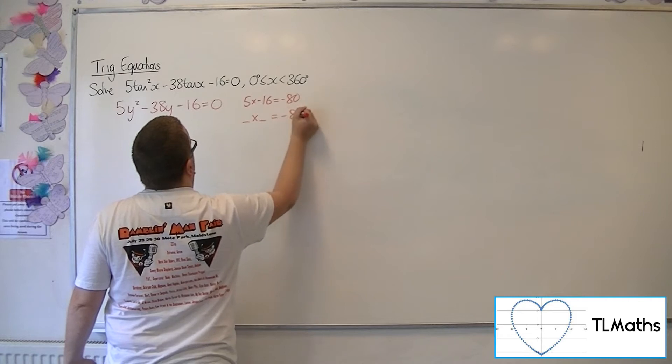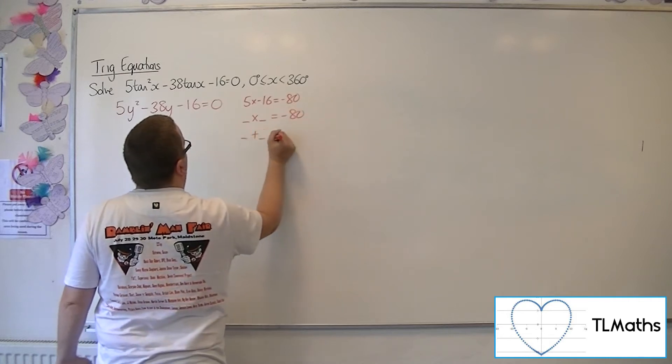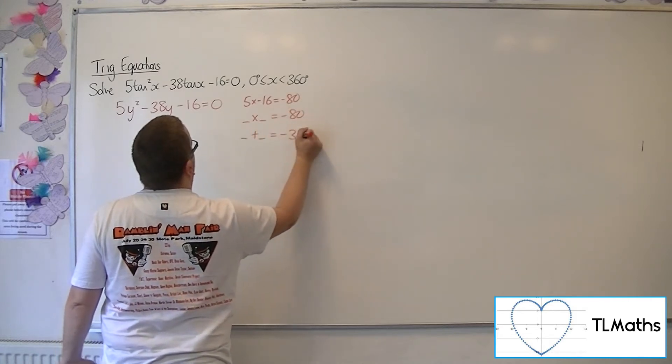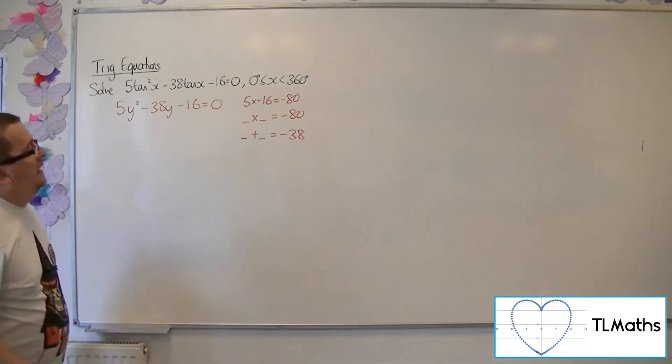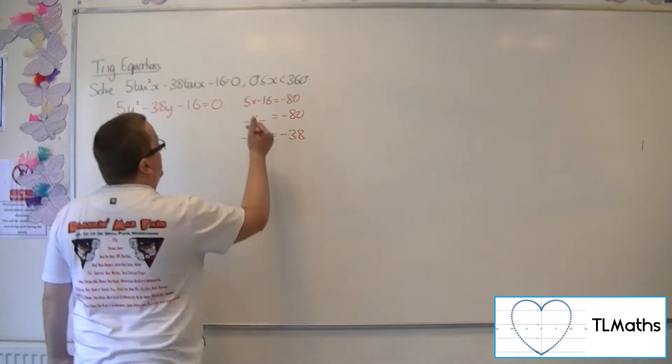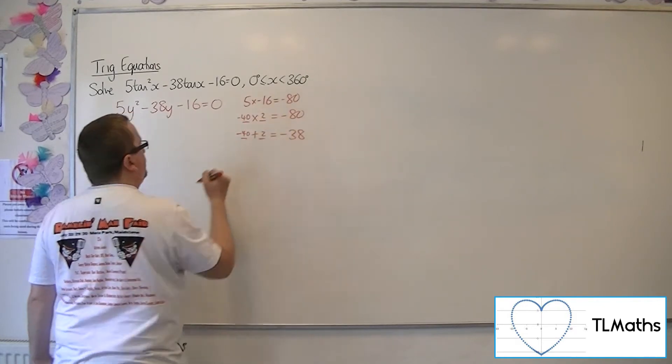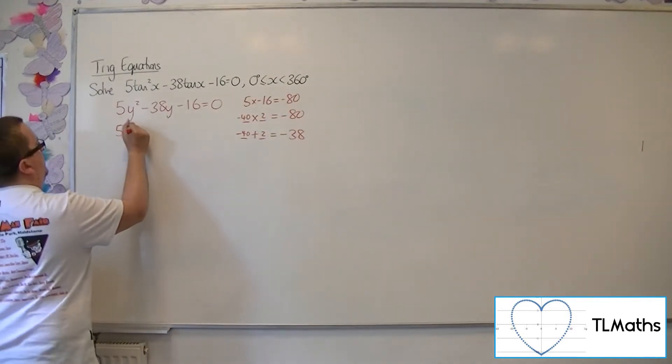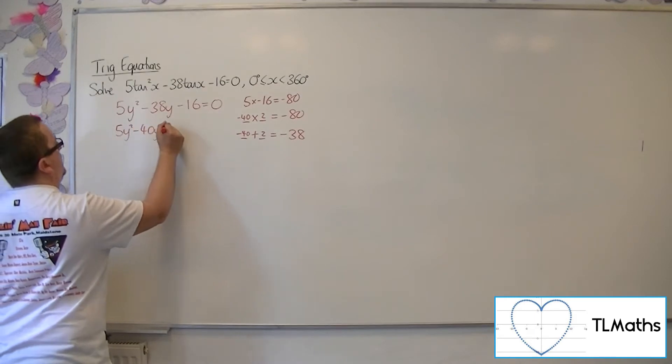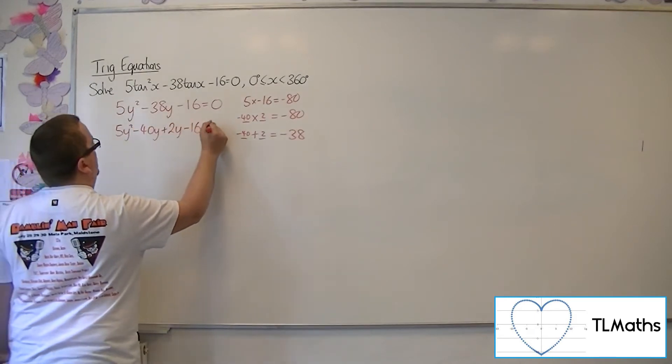Then I'm looking for two numbers that multiply together to make minus 80, but add together to make minus 38, which would be minus 40 and 2. So 5y squared minus 40y plus 2y minus 16 equals 0.